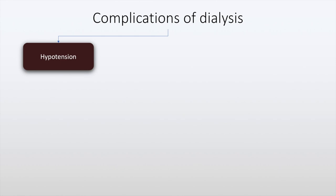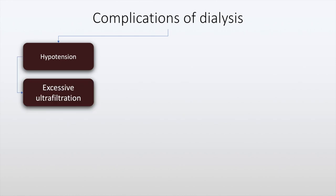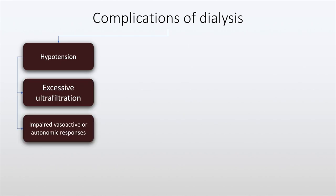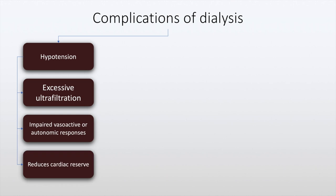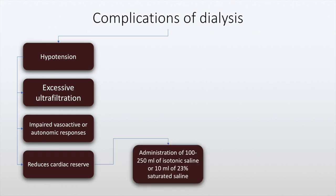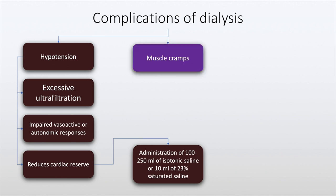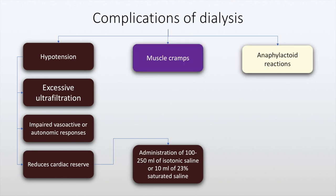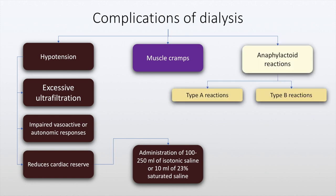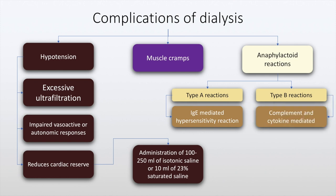The complications of dialysis include hypotension, and this is due to excessive ultrafiltration, impaired vasoactive or autonomic responses, and reduced cardiac reserve. Administration of 100 to 250 ml of isotonic saline or 10 ml of 23% saturated saline may be undertaken. Other complications include muscle cramps, which is present in more than half of the patients, and anaphylactoid reactions which include type A reactions or type B. Type A is IgE-mediated hypersensitivity reaction whereas type B is complement and cytokine mediated.